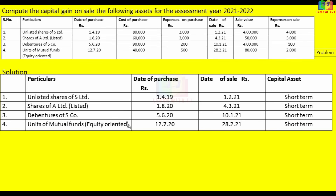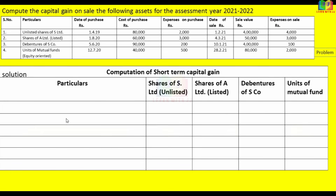All 4 assets are short-term, so we compute short-term capital gain for each one by one. The sale values are: unlisted shares — 4 lakh; listed shares — 50,000; debentures — 4 lakh; units of mutual fund — 80,000.